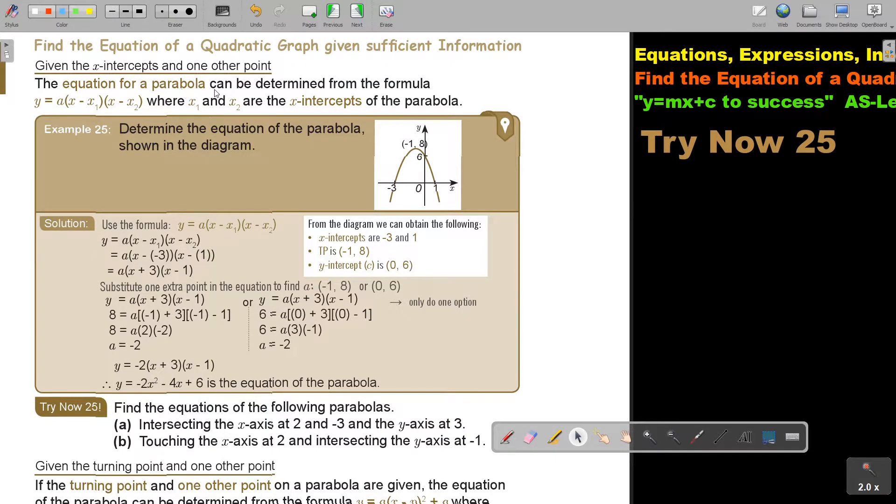The equation for a parabola can be determined from the formula: Y equals A times X minus the first intercept times X minus the second intercept. And then there's a constant, where X are the X-intercepts of the parabola. So determine the equation of the parabola shown in the diagram. Take note that it cuts there at negative 3 and it cuts there at 1.